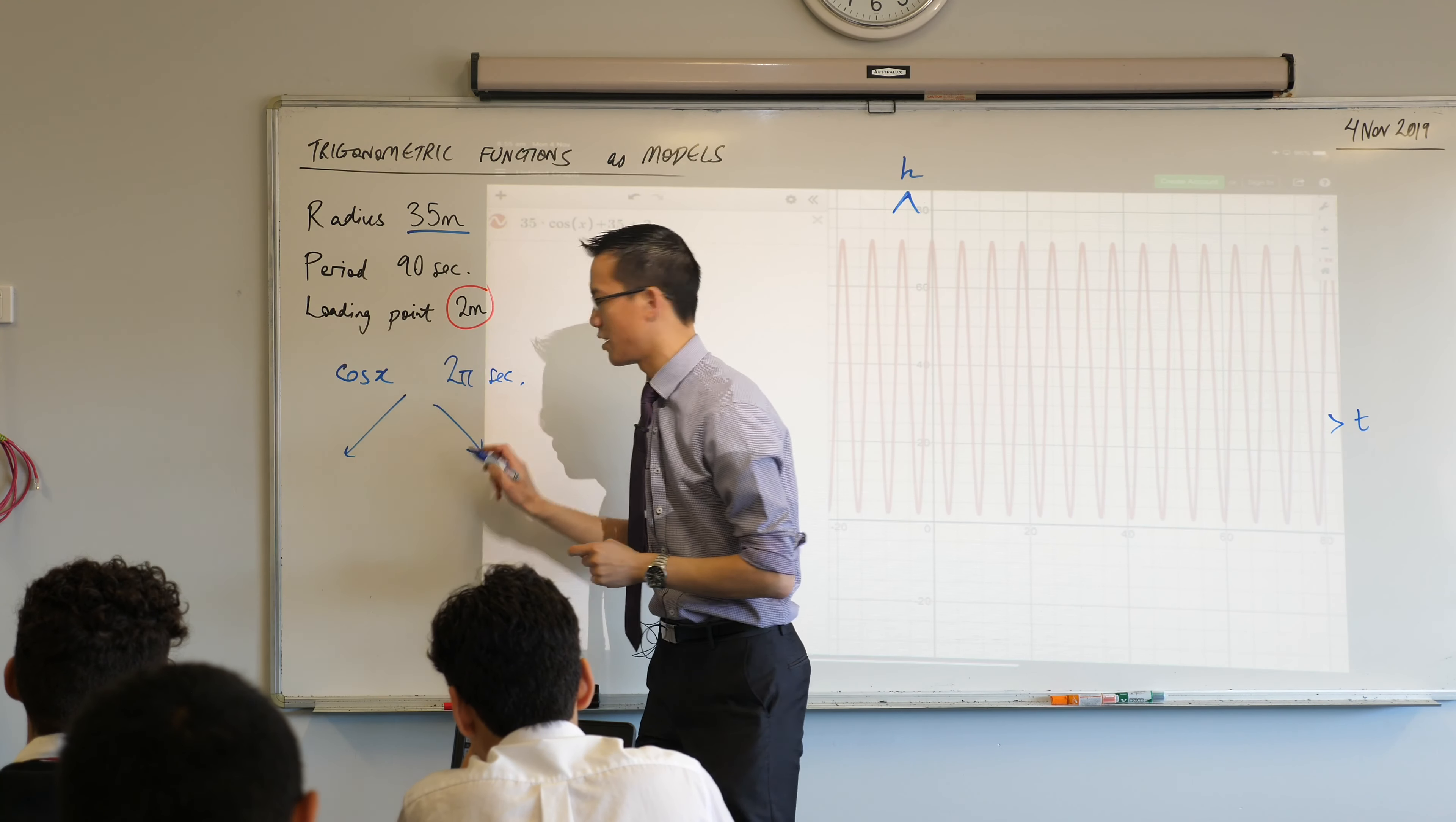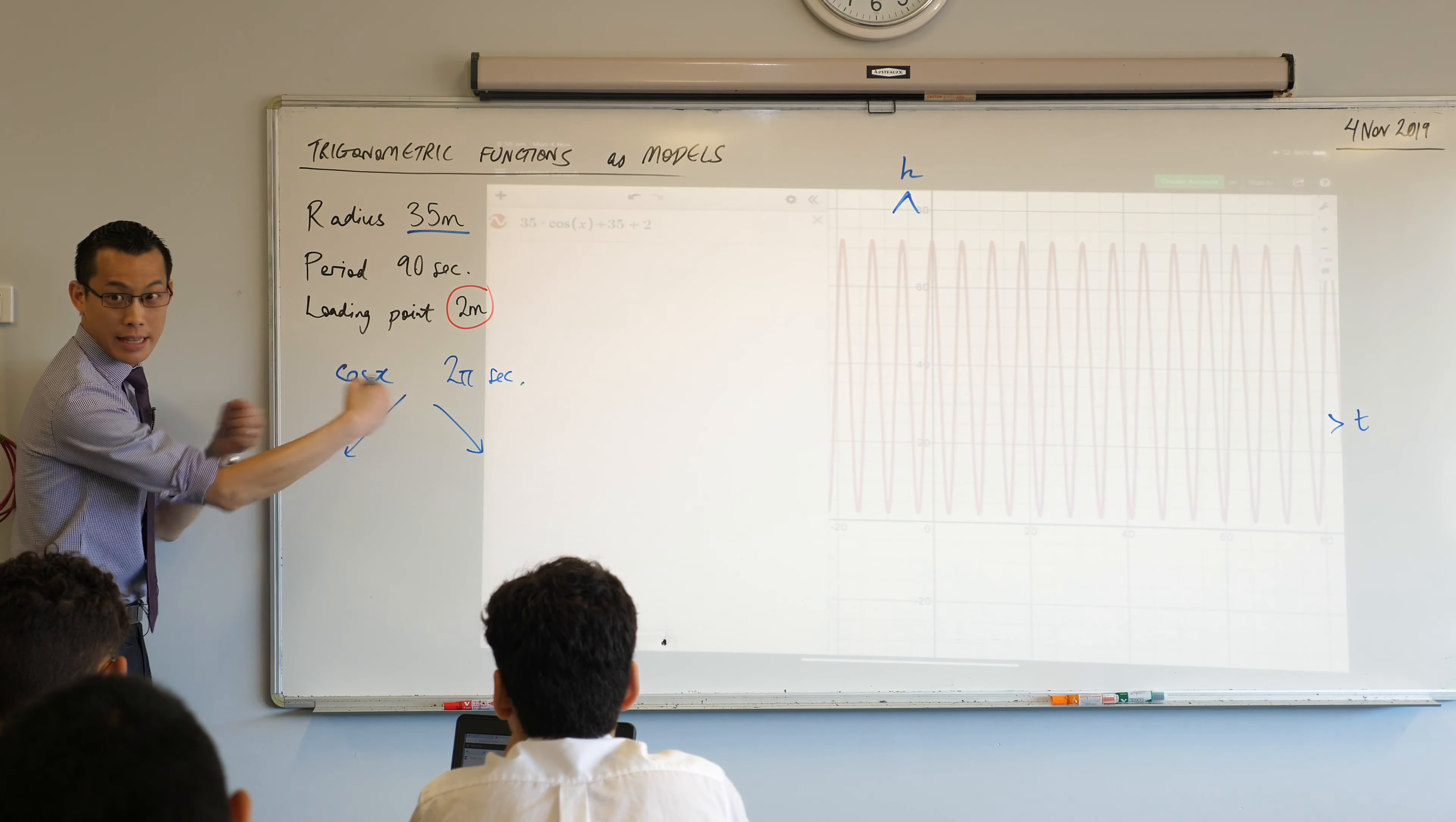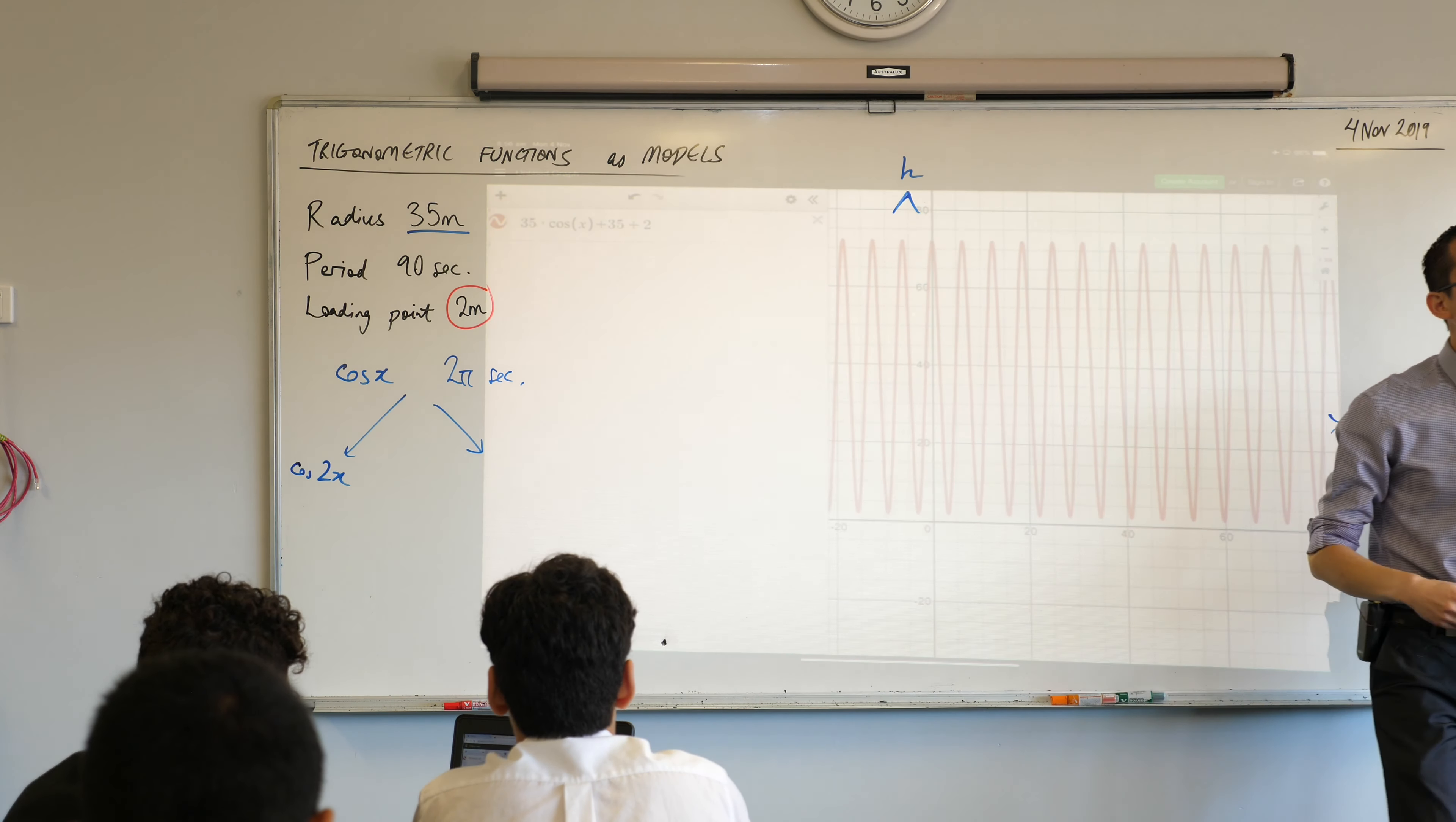So I'm going to give a couple of suggestions. We just saw putting a number at the front here. That changed it vertically, that was good. But I want to change things horizontally. That's the period. So if for example, I chucked a 2 out the front there. Cos 2x. Don't put it in just yet. What do you predict would happen? What would be the period, the time that it takes to go through one cycle?